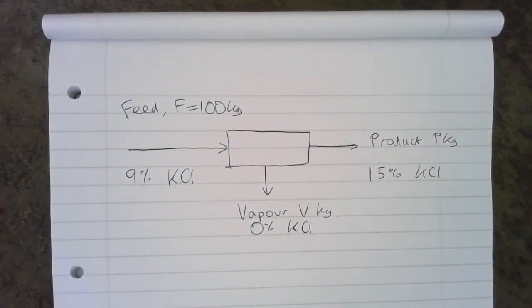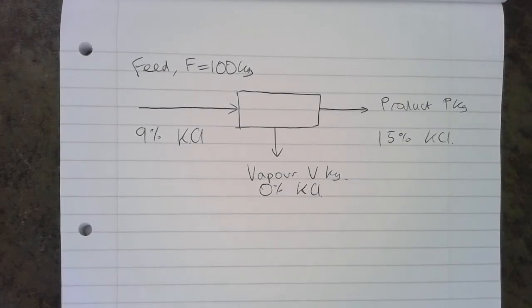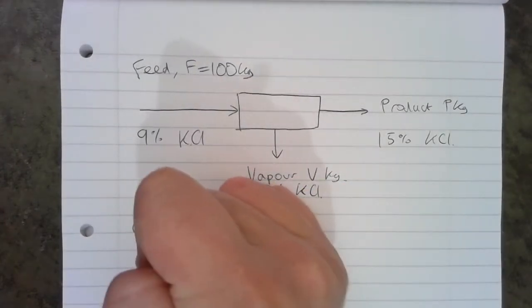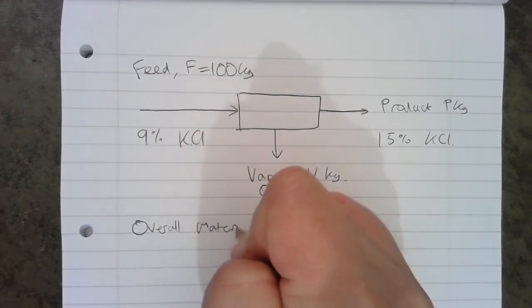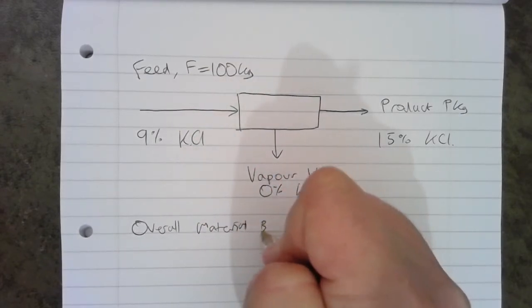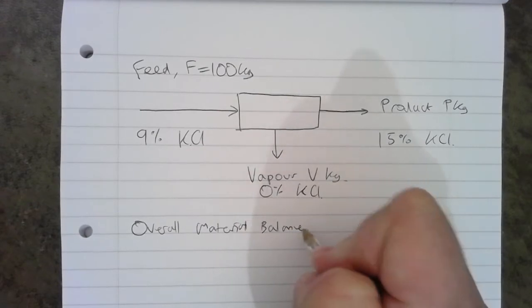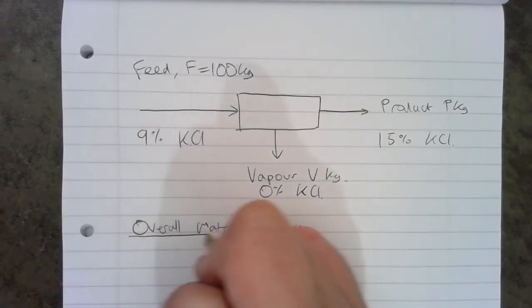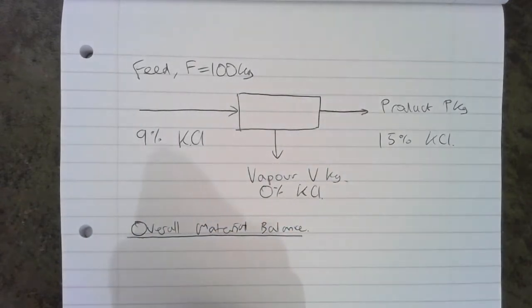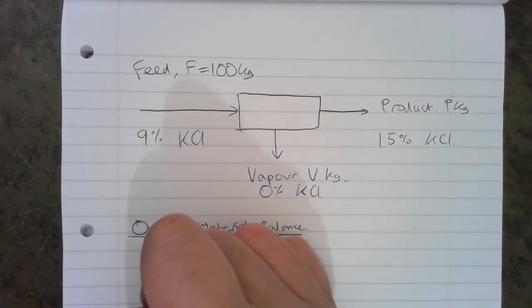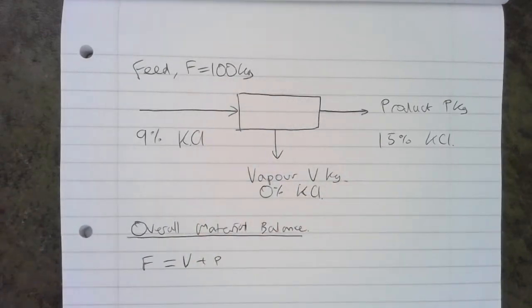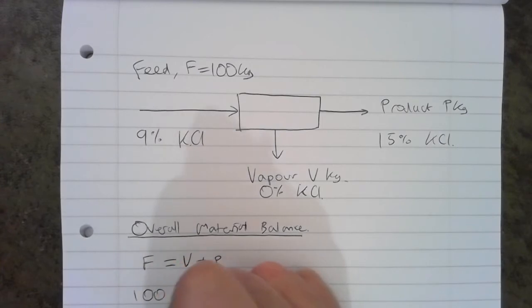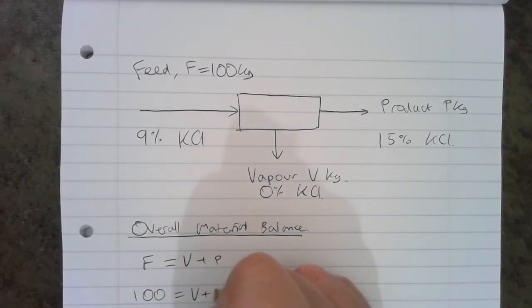Now that we've got our diagram, we need to do some material balances. So the first one is the overall material balance. What we've got going in is F, and that equals to what's coming out, which is V plus P. And we know that F is 100, so we can actually write 100 equals V plus P.